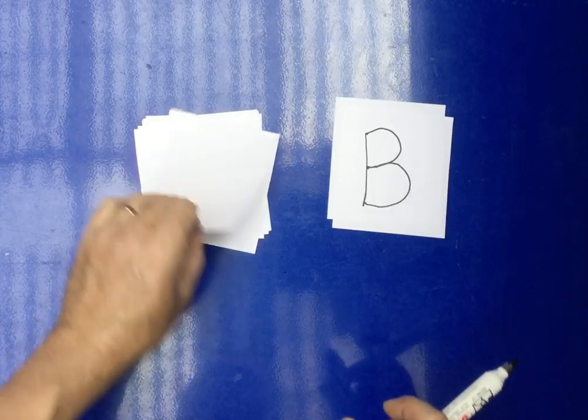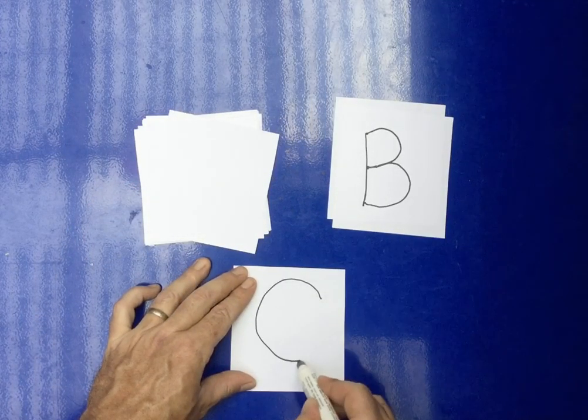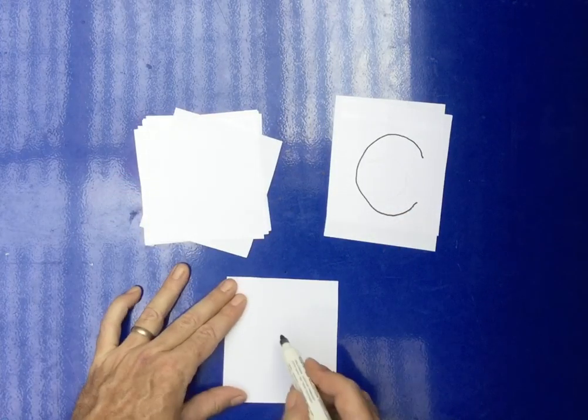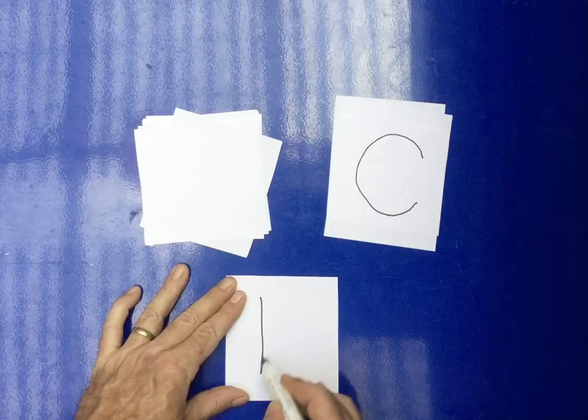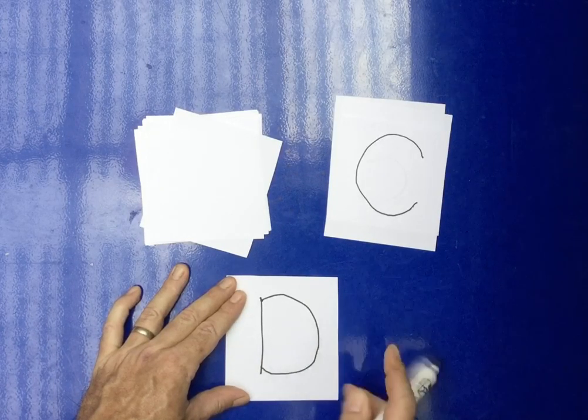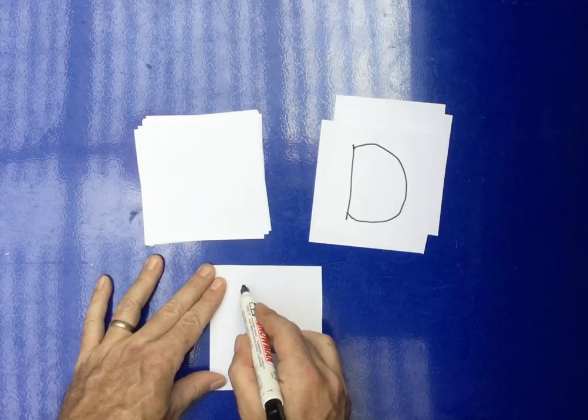After the B, we have C. After the C, it's the D. We go down, go to the top again and make the big belly. After the D, it's the E.